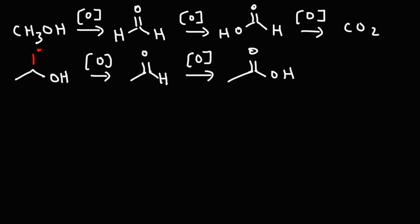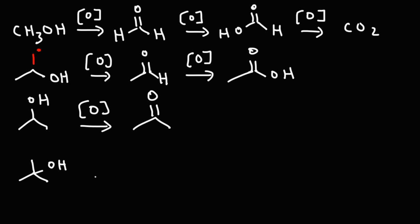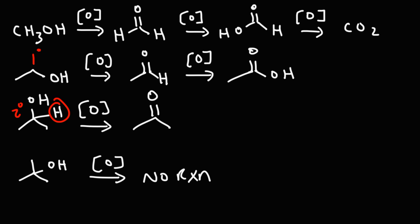If you have a secondary alcohol, this is going to stop at the ketone level upon oxidation. Tertiary alcohols are resistant to oxidation — for the most part it's going to be no reaction, unless you have a reaction capable of breaking carbon-carbon bonds. One reason tertiary alcohols are resistant to oxidation is because they don't have the alpha hydrogen that's present in primary and secondary alcohols; that carbon has no hydrogens on it.